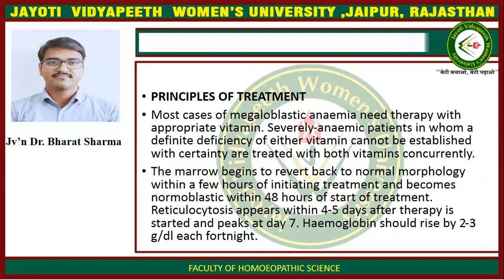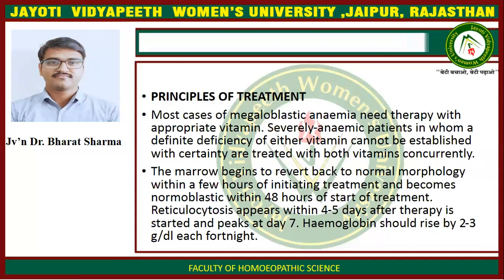Principle of Treatment: Most cases of megaloblastic anemia need therapy with the appropriate vitamin. Severely anemic patients in whom the definite deficiency of either vitamin cannot be established with certainty are treated with both vitamins concurrently. The marrow begins to revert back to normal morphology within a few hours of initiating treatment and becomes normoblastic within 48 hours of the start of treatment. Reticulocytosis appears within 4-5 days after therapy is started and peaks at day 7. Hemoglobin should rise by 2-3 grams per deciliter each fortnight.